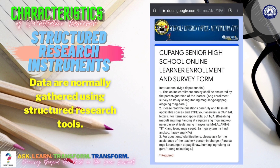Data are normally gathered using structured research tools such as questionnaires to collect measurable characteristics of the population like age, socioeconomic status, number of children, among others. For example, in enrolling yourself in Kupang Senior High School, you have answered the Kupang Senior High School Online Learner Enrollment and Survey form. Here, every enrollee answered the same questionnaire.